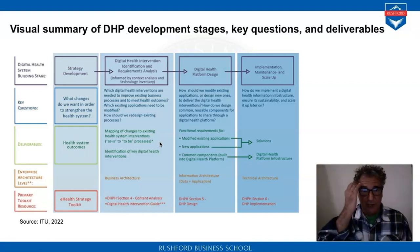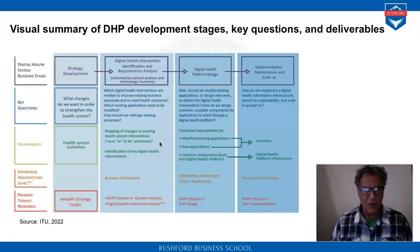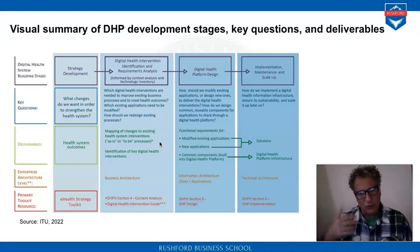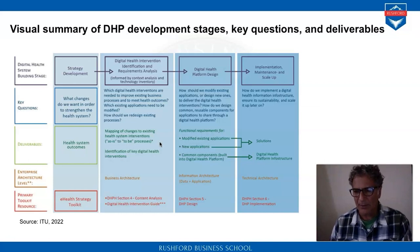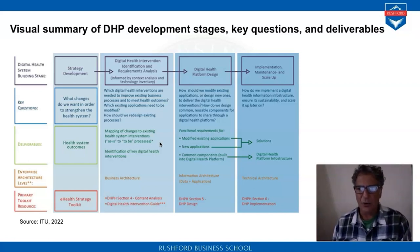Which digital health interventions are needed to improve existing business processes to meet health outcomes? Which existing applications need to be modified? How should we redesign existing processes? How can we adapt the apps on mobile devices to communicate with the platform, and what is the internet connectivity relationship between the platform and various apps? And ultimately, how do we implement a digital health information infrastructure?